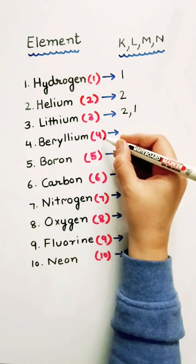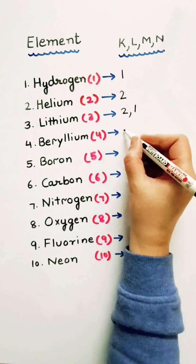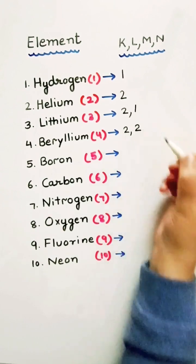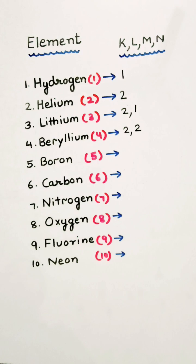Four electrons are to be distributed. So, 2 and the next one is having 2, right?